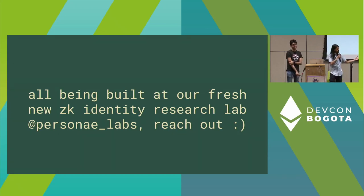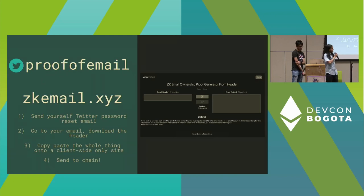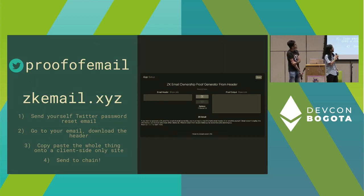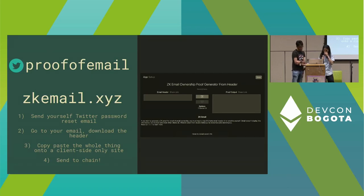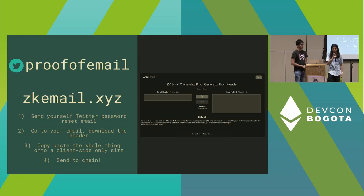If you're interested in any of these primitives, we're working on them at Personae Labs and we'd love if people reached out to help. We think this will rapidly change how we think about decentralized identity over the next year or two. For more updates about proof of email — including our website, open source code, and experiments as we release them — follow us on proof of email. Our front end, where you can generate your own ZK proof from an email, is live at zkemail.xyz. The user flow is just four steps, and you'll notice there is no sending to a server involved.